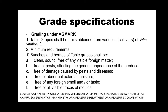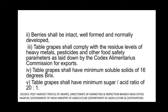Grapes should be clean, sound, and free of any visible foreign matter, free of paste, free of damage, free of abnormal external moisture, free of any foreign smell or taste, and free of all visible traces of molds. They shall be intact, well formed, and normally developed. Table grapes shall comply with residue levels of heavy metals, have a minimum soluble solids of 16 degrees Brix, and a minimum sugar-to-acid ratio of 20 to 1.